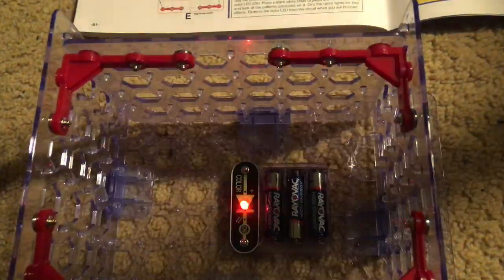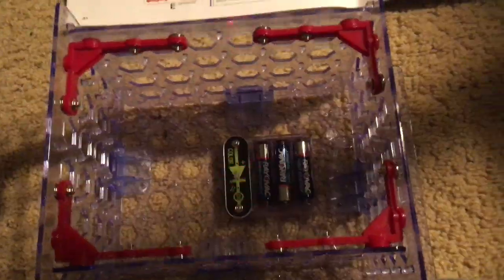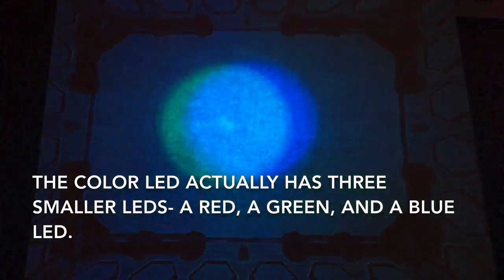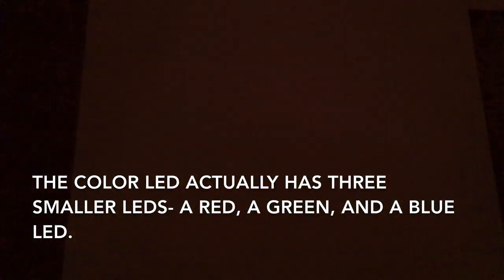To make this circuit more fun, we can place a piece of plain white paper over the top of the box and turn off the light. Can you observe the different color patterns? The three main colors: red, green, and blue.